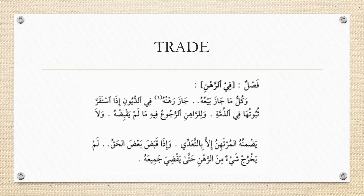The author then discusses a new mas'ala — arrahn (collateral/pledge), which is also found in the Quran: 'wa in kuntum ala safarin wa lam tajidu katiban farruhunun maqbubah.' For example, if you go to a brother and ask for a thousand-pound loan but he does not trust you to pay it back, he asks for a guarantee. You offer him your car or phone as security. If you default, he can sell it to recover the debt. This is the essence of arrahn.